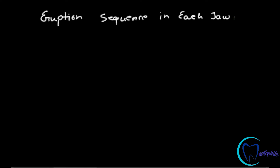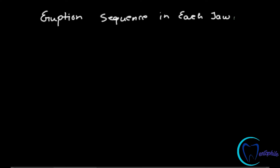Although there is a difference in eruption time, the sequence of eruption within each individual arch is the same. In the upper teeth there is first eruption of central incisors at about 8 to 12 months of age, followed by the lateral incisors at 9 to 13 months. Then instead of the canine, the first molar erupts faster at about 13 to 19 months, followed by the canine at 16 to 22 months, and finally the second molar at 25 to 33 months.